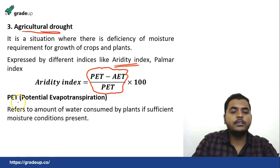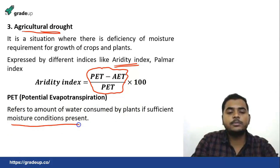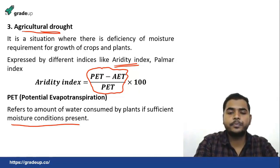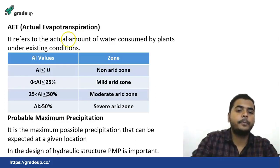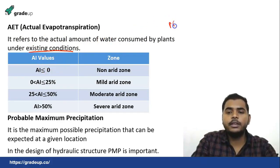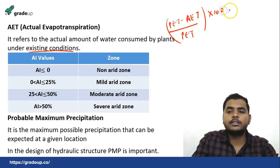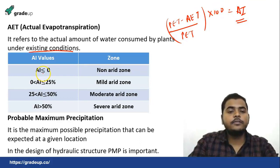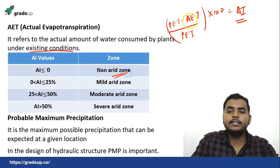Potential evapotranspiration refers to the amount of water consumed by plants when sufficient moisture is available to them. AET is the actual evaporation that is taking place under existing or normal conditions, so AET is less than PET. The Aridity index formula is: Aridity index = ((PET − AET) / PET) × 100. If the Aridity index is less than 0, it is a non-arid zone, which means AET is greater than PET — sufficient rainfall is present.